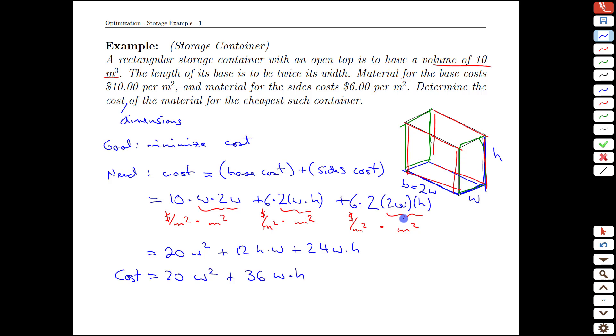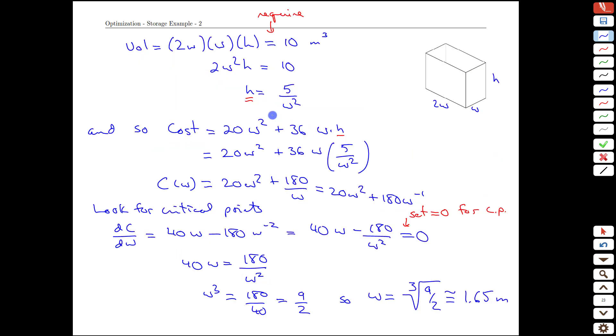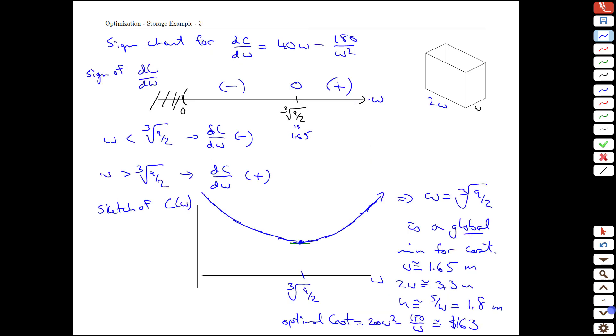We first of all recognized what we were minimizing cost. Then we built a function for the cost. It was almost right at the outset, but it had a variable extra that we couldn't work with. We needed to get it down to one variable. We used information in the problem to get rid of that variable. And after that, it was a classic optimization task of you have a function, find its critical points, and analyze the function around the critical points to identify that it was a local minimum, or in this case here, actually a global minimum, and find the associated cost with that minimum.